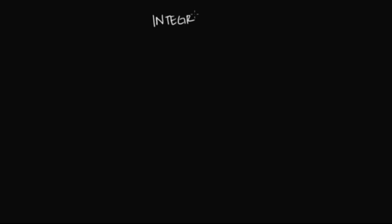I really want to go ahead and integrate some of the topics you've learned in general chemistry with topics in metabolism. Specifically, from a general chemistry perspective, I want to review electrochemistry. And then I'm going to connect it to one of the biggest topics in metabolism: the breakdown of glucose in a process called cellular respiration. Cellular respiration describes the body's way of efficiently producing the energy currency of the cell, which is ATP.